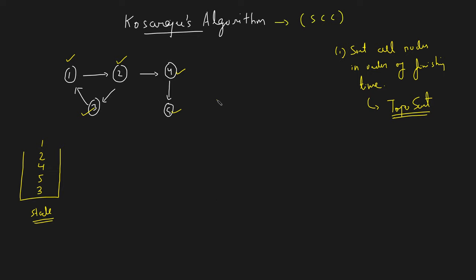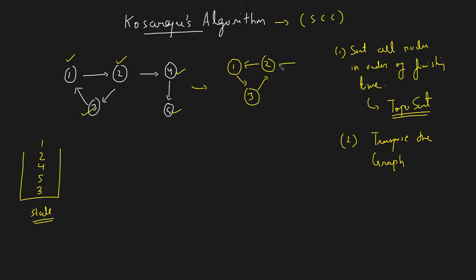Step two is to transpose the graph — reversing all edges — so that you don't end up traversing into other SCCs. In the transposed graph, all edge directions are reversed. Now if you start a DFS from node one on the transposed graph, you visit one, three, and two, but you will not go to four and five. That is the advantage of transposing: you stay within the SCC.